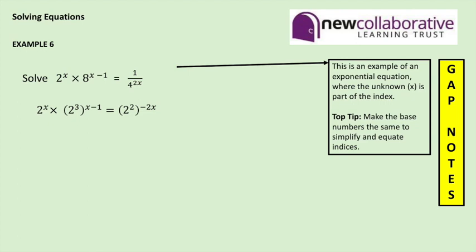We can now use the basic rules for indices to simplify each term. So we get 2 to the power x. The second term we can simplify by multiplying the indices together to give us 2 to the power 3x minus 3. And on the right hand side do the same thing to get 2 to the power of negative 4x.